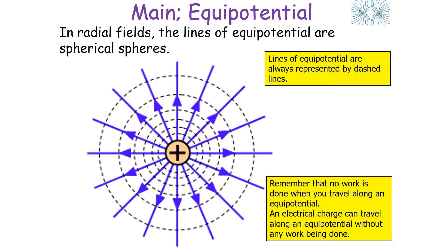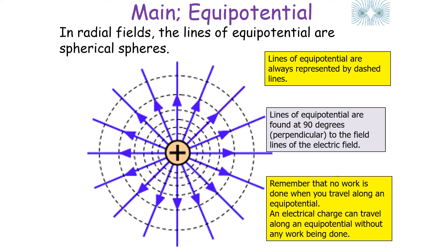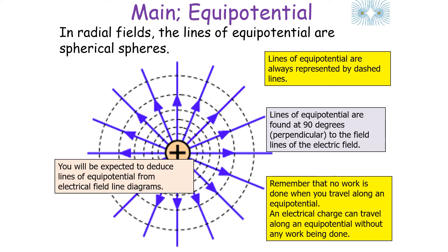In a radial field the lines of equipotential are spherical surfaces. In electrical field diagrams, lines of equipotential are always represented by dashed lines. No work is done when a charged object travels along an equipotential line, and these lines of equipotential are found at 90 degrees — perpendicular — to the field lines of the electrical field. You would be expected to deduce the lines of equipotential from an electrical field line diagram.